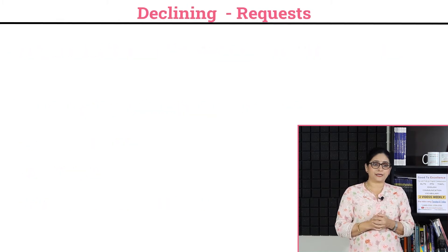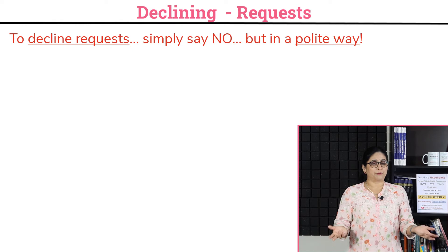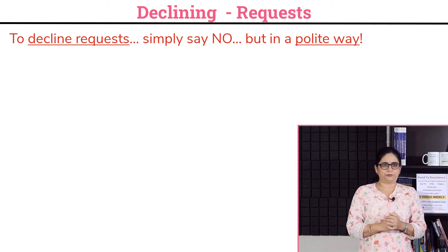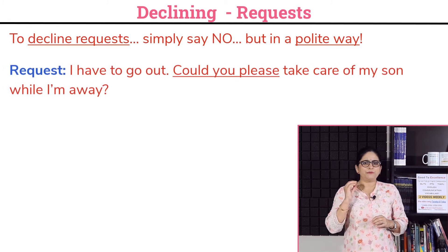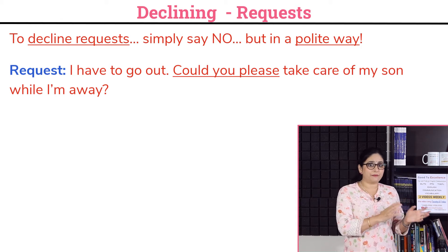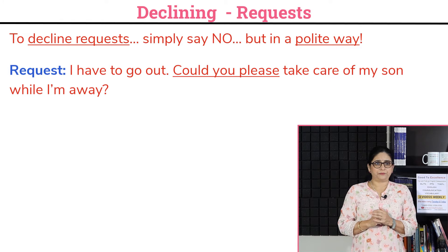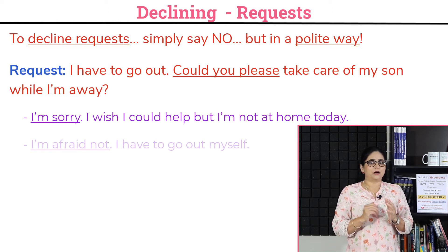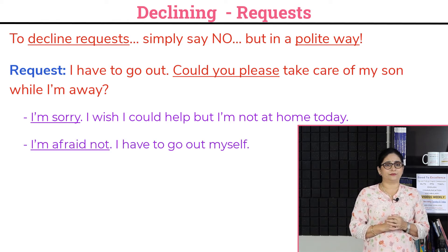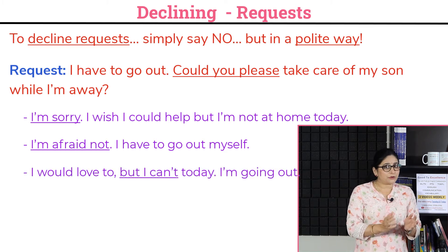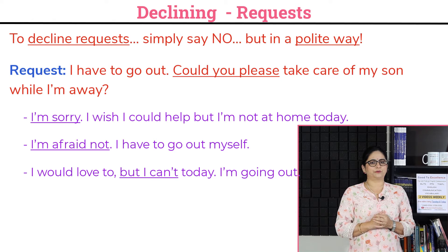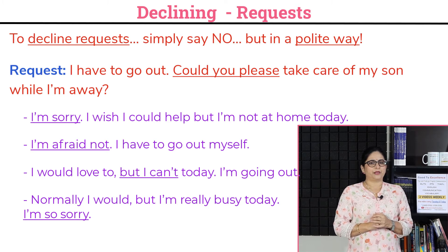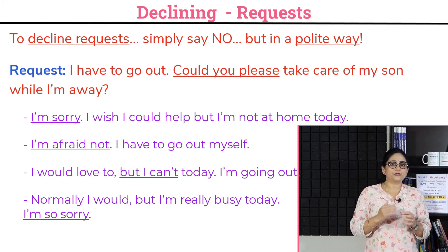Sometimes we need to decline a request — simply say no, but in a polite way. Here is a request politely turned down: 'Could you please take care of my son while I am away?' The responses could be: 'I am sorry, I wish I could help but I am not at home today,' or 'I am afraid not, I have to go out myself,' or 'I would love to, but I can't today — I am going out,' or 'Normally I would, but I am really busy today. I am so sorry.' Any of these responses may be used to turn down a request.